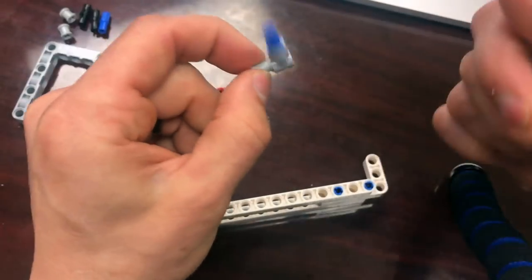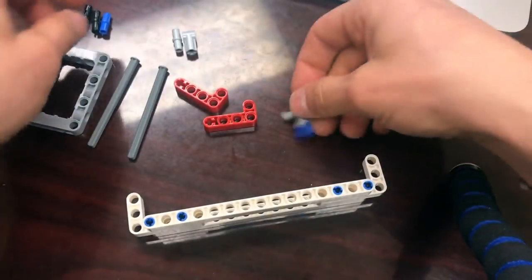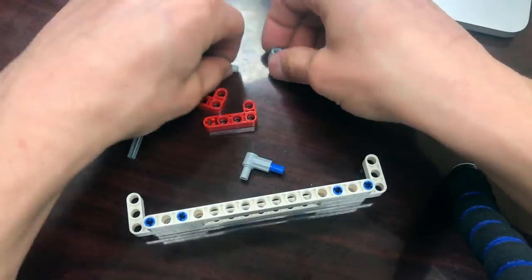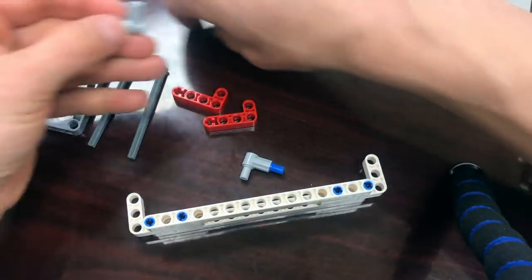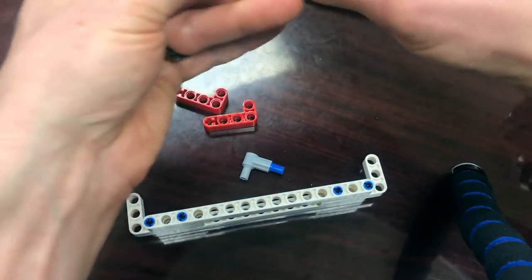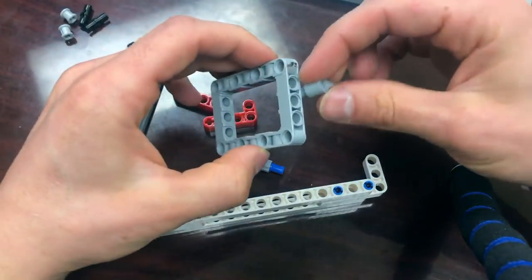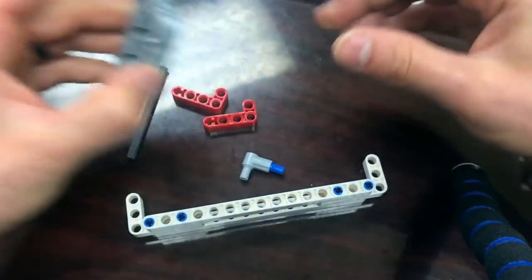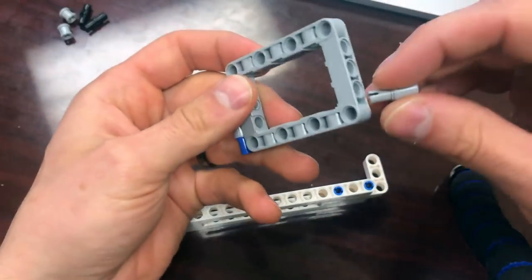So the peg should spin pretty freely like this. I'm going to make two of these and then I'm going to stick them in the center hole of the picture frame.